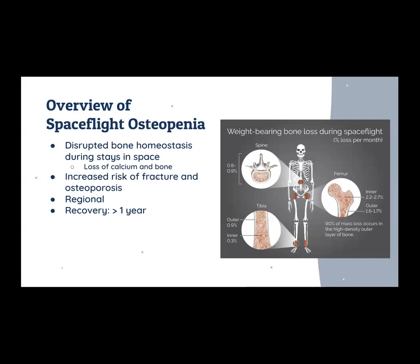For an overview, bone growth is a dynamic process — it's constantly being formed and reduced in a mechanism that we call remodeling. Remodeling operates through two types of bone cells: osteoblasts form bone while osteoclasts regulate mineral levels and ensure maintenance. During spaceflight, this homeostasis gets disrupted and resorption of chemicals like calcium gets reduced as a result. Osteopenia is also regional and affects different parts of the body differently. Unfortunately, recovery from osteopenia is long-term and may continue to affect the health of astronauts when they return to Earth.